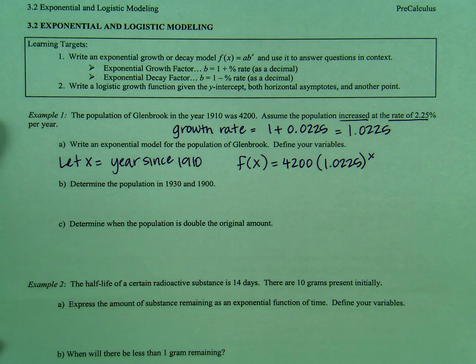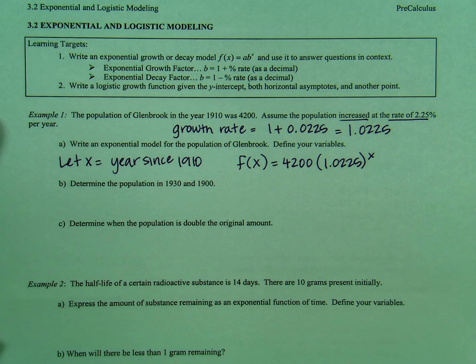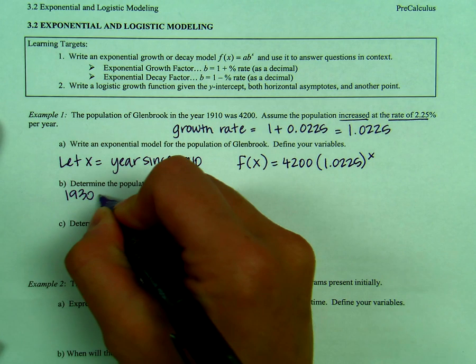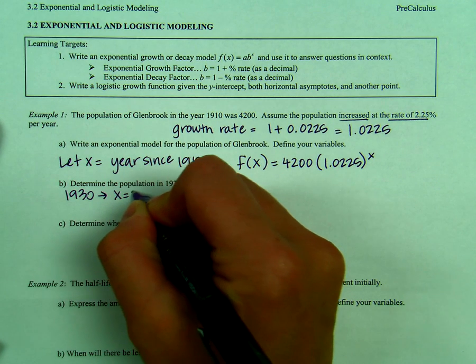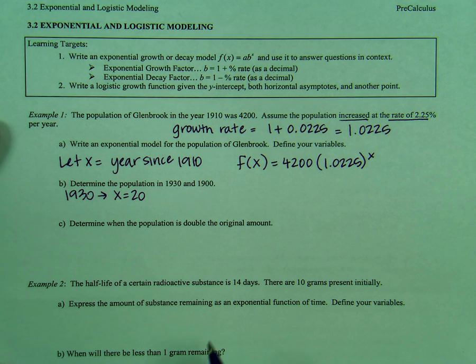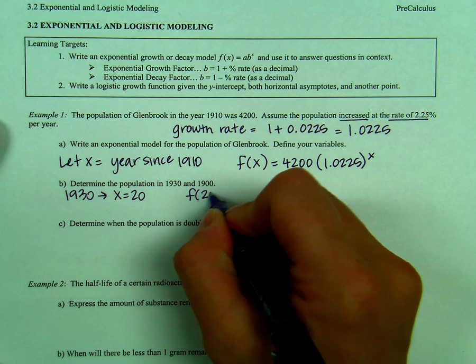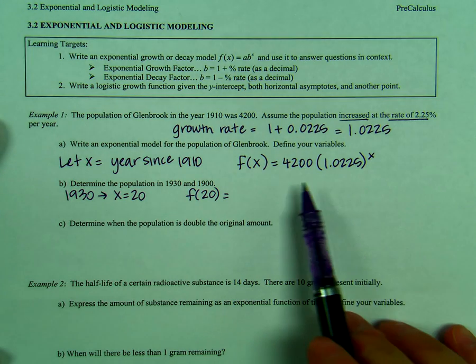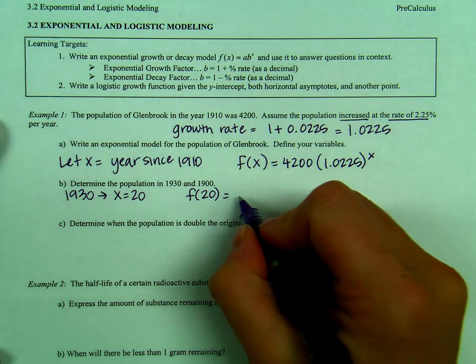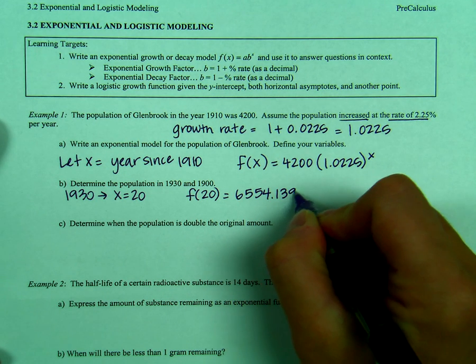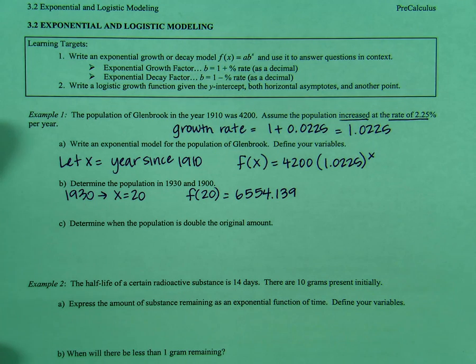In part b, we're asked to determine the population in 1930 and 1900. In 1930, that's going to mean that x is 20. Remember that x is year since 1910. So if x is 20, we're just simply going to find f of 20. Using our calculators, using the formula f of x, we would get 6,554.139. Remember that we always round to three decimals when doing these.